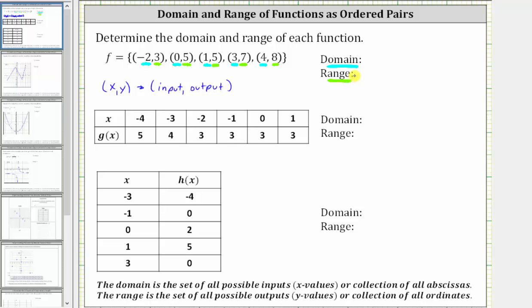When giving the domain and range as a list, we use set notation or curly brackets. So the domain is {-2, 0, 1, 3, 4}. And for the range, even though five occurs twice, we only list it once: {3, 5, 7, 8}.